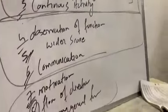So to recap the nine characteristics of direction: the first set is goal-oriented activity, function at every level of management, and continuous process. The second set is observation of function, wider scope, and communication. The third set is motivation, flow of direction is downward, and it is a managerial function. Nine points covered in detail for characteristics of direction.